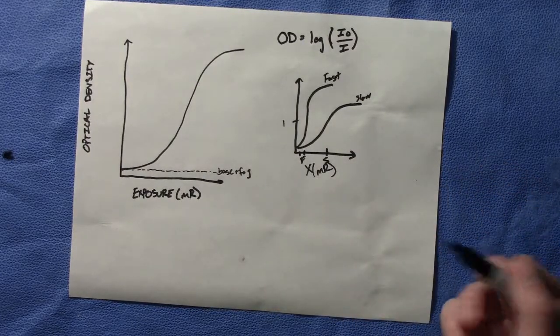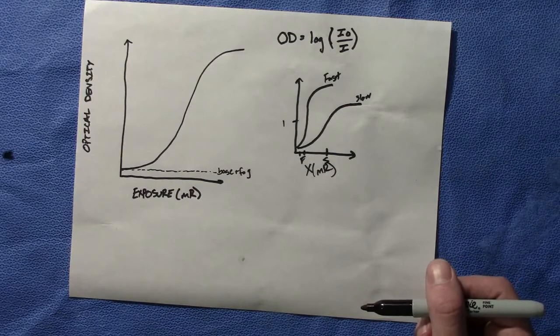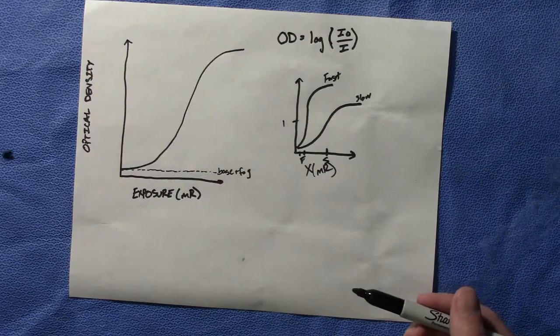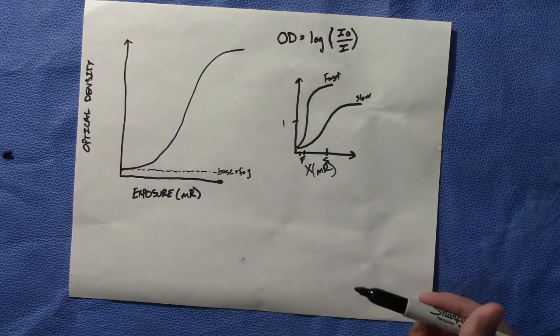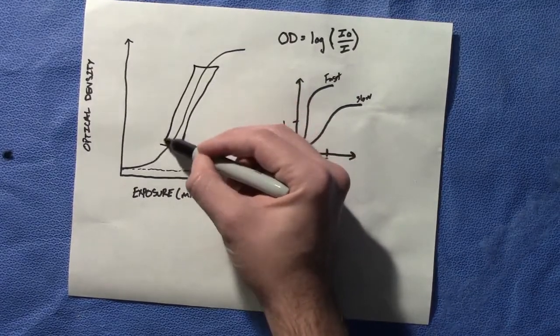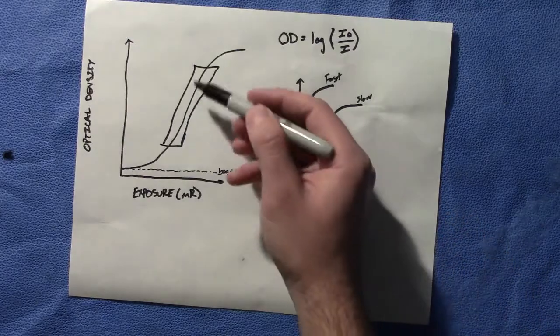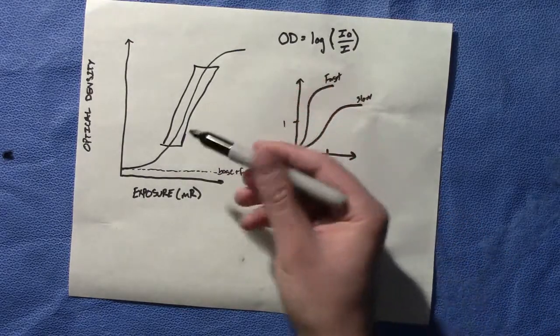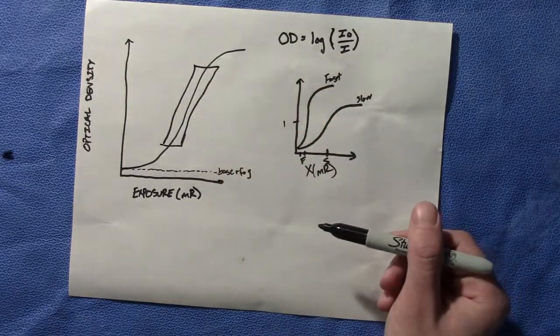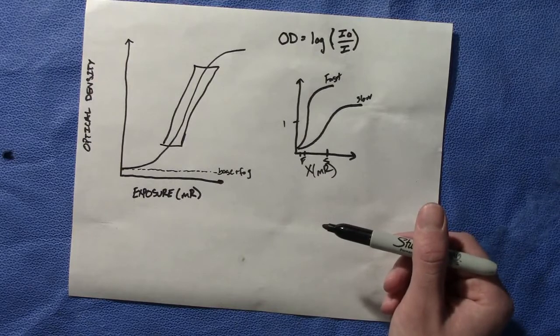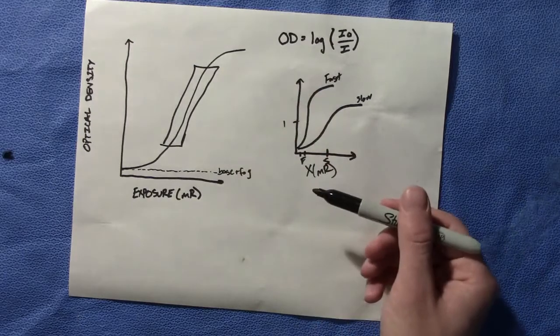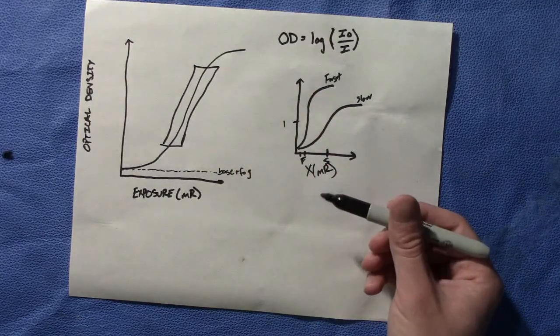That's what is meant by the speed of the film. Now the gradient and latitude. The gradient is the slope of the curve in the linear portion, around right here. That's where we want our imaging and dosimetry. It's predictable. The gradient measures the contrast of a film as well.